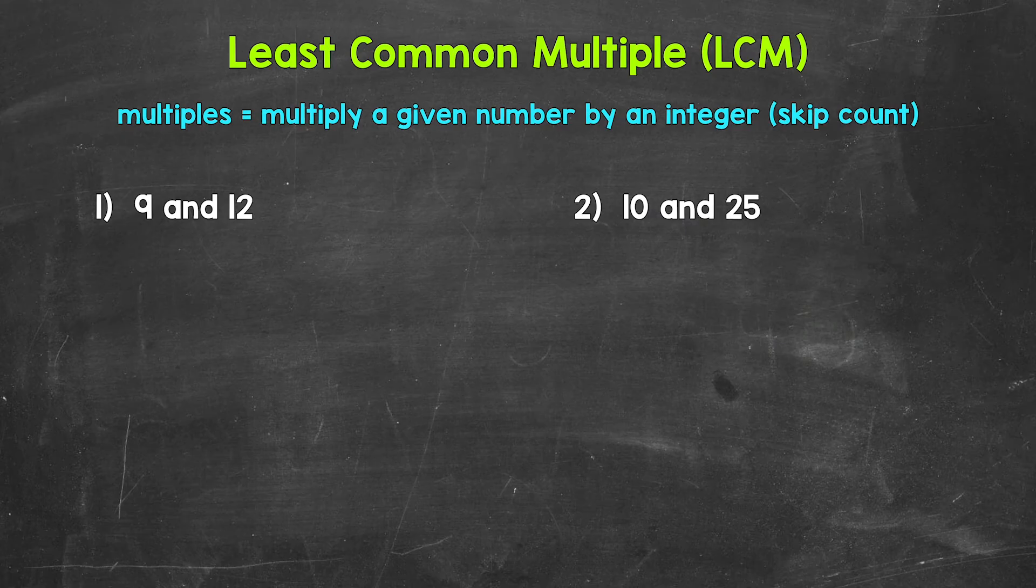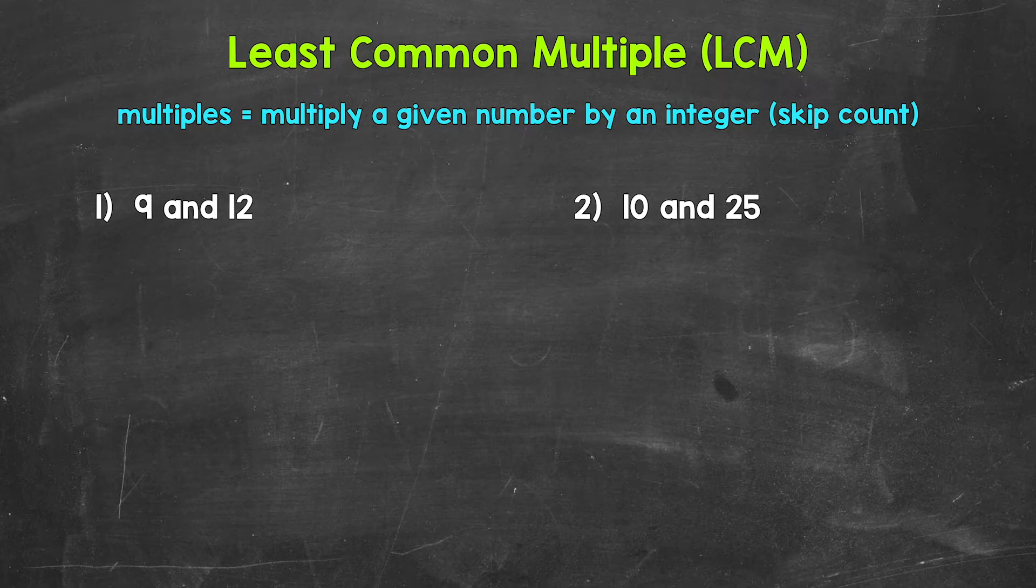In this video, I'm going to cover how to find the least common multiple. As far as the least common multiple between numbers, this is going to be the smallest multiple in value that both numbers share. Now, a multiple is the result of multiplying a given number by an integer.